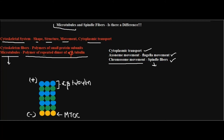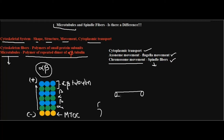A microtubule is a polymer of repeated dimers of alpha-beta tubulin. The alpha-beta tubulin dimer is present in the cytoplasm, and these dimers start arranging themselves one above the other — alpha, beta, alpha, beta — and this arrangement results in the synthesis of a cylindrical hollow tube. That is our microtubule. There are 13 molecules arranged in a cylindrical way to form that tube.